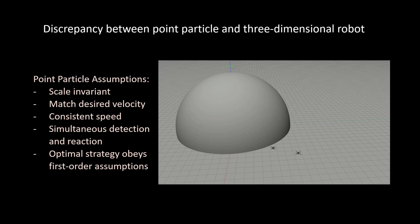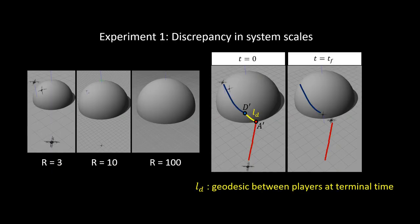In the experiments, we will focus on observing the discrepancy in system scales and strategies. We change the radius of hemisphere for the first experiment and observe any discrepancy. We also define a metric LD as a geodesic between players at terminal time to see the difference in defender's optimal strategy.